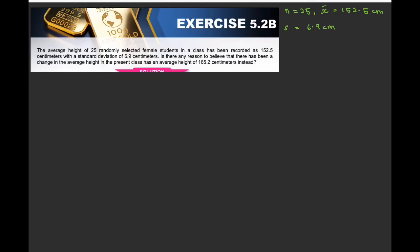Okay, next sentence. Is there any reason to believe that there has been a change in the average height in the present class as an average height 165.2 cm instead? Okay, this one is the information. There has been a change. So equals and not equals. Average height notation is mu and the average height is equal to. So here is mu not.